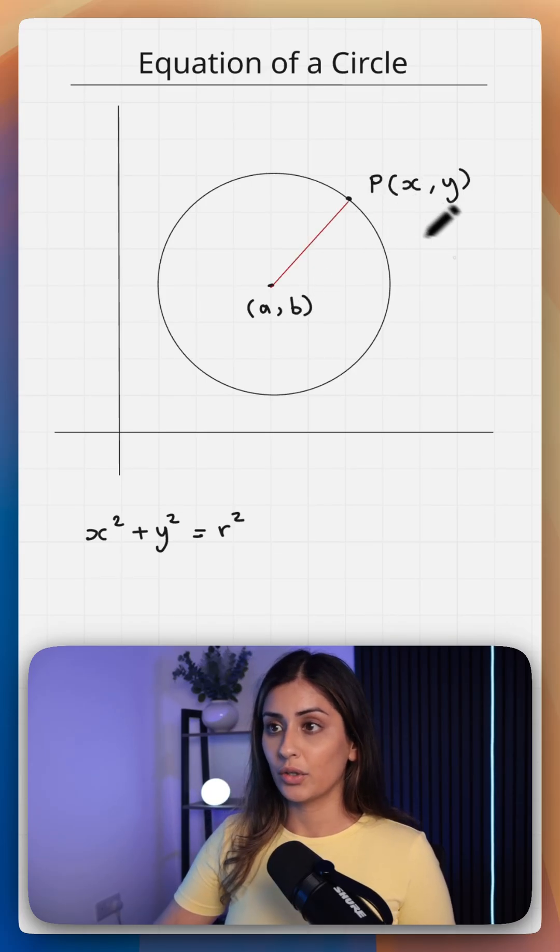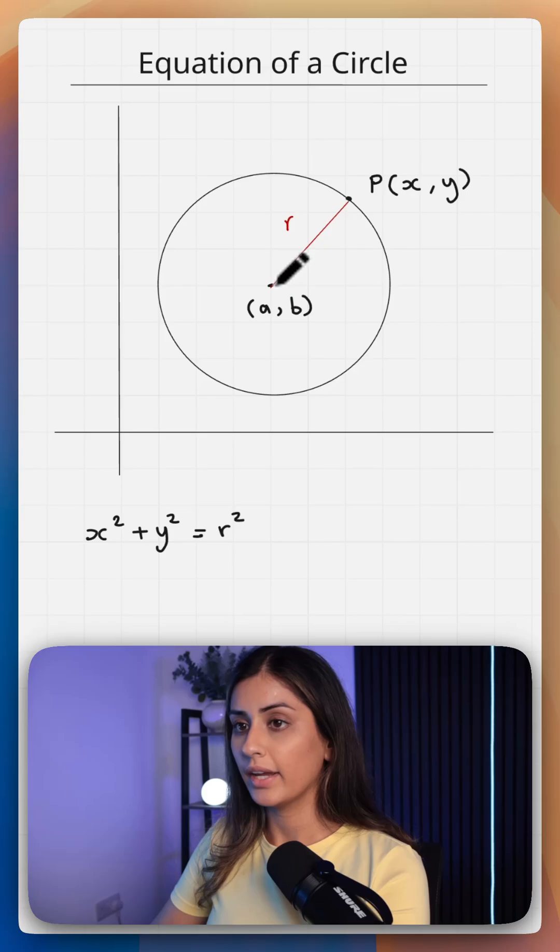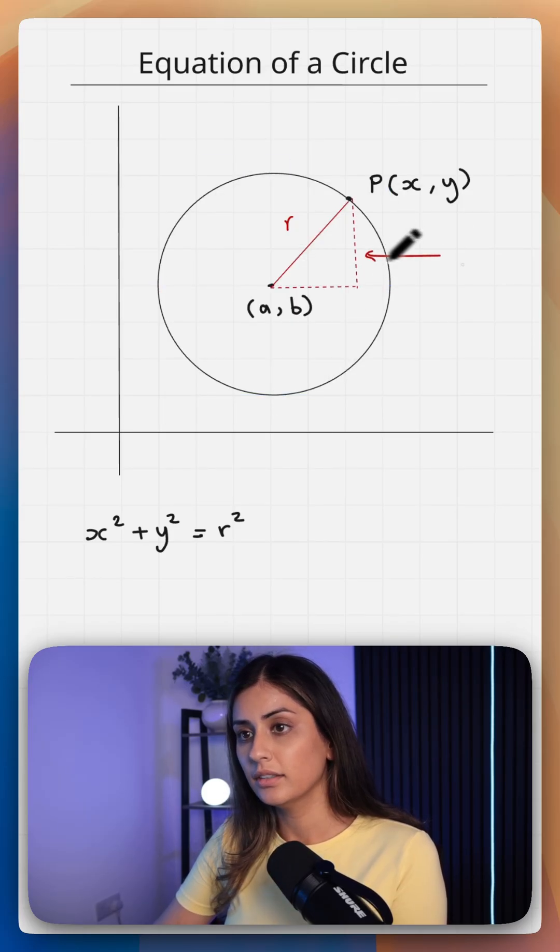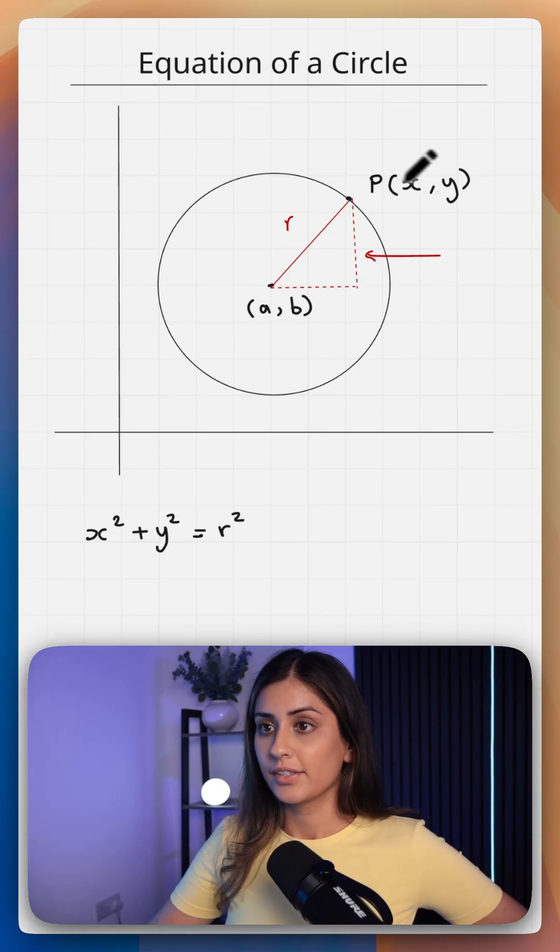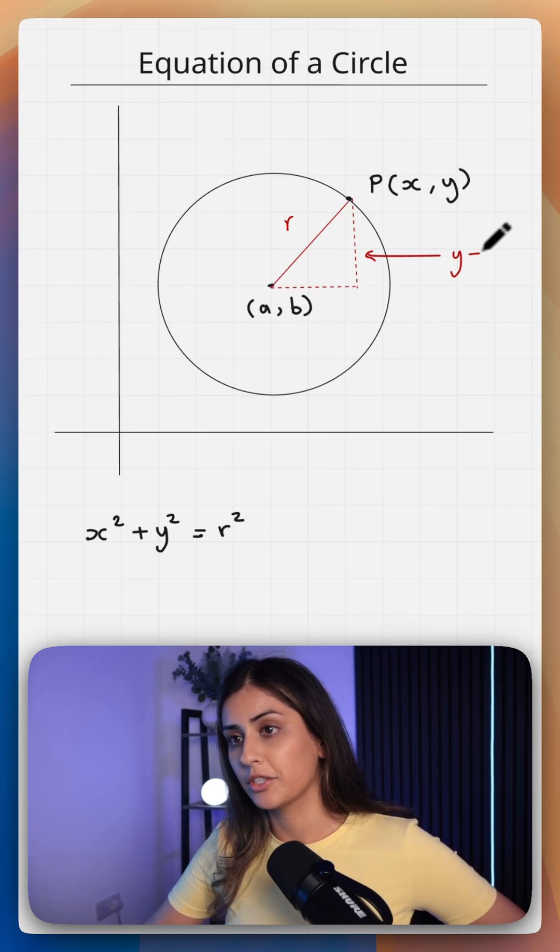Any point p on your circle is r units away from your center. We could draw a triangle here to help us visualize. This distance here is your change in y, so it's this value here y minus your y value here which is b.